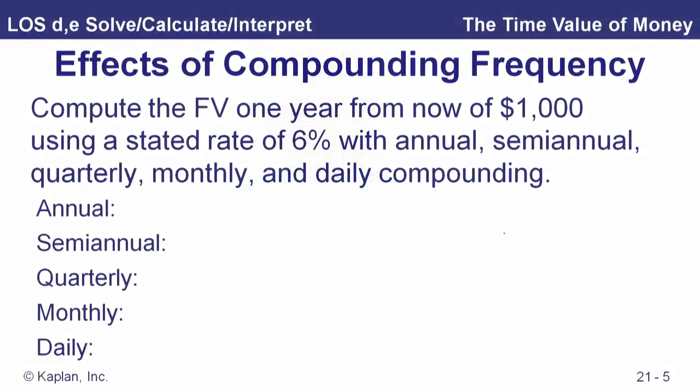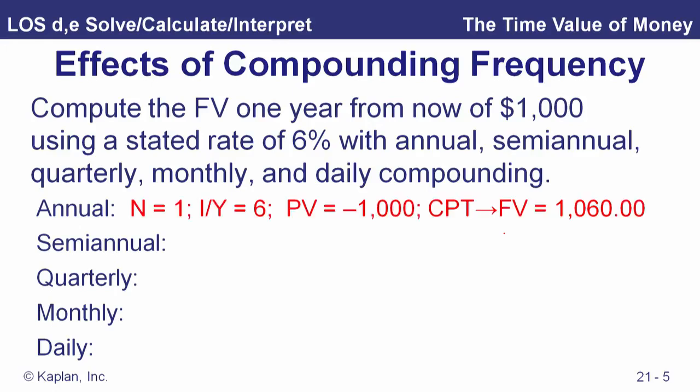Let's look at the effects of compounding frequency. Compute the future value one year from now of $1,000 using a stated rate of 6% with annual, semi-annual, quarterly, monthly, and daily compounding. This is a review of what we looked at earlier in this reading to do with the effective annual rate. Our $1,000 at 6% annual compounding grows to $1,060.